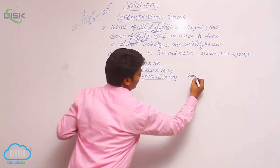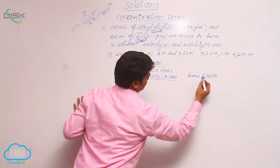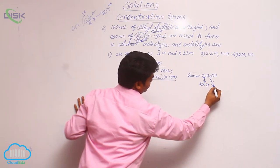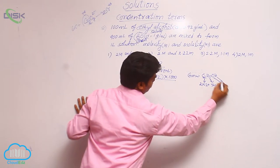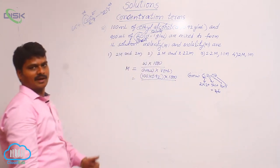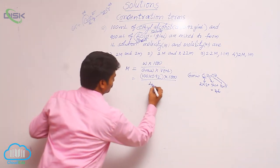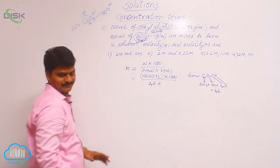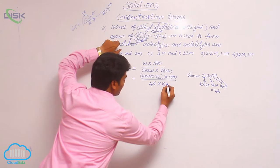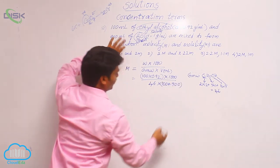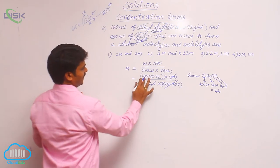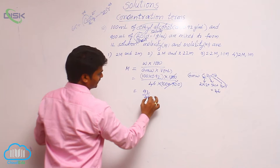The gram molecular weight of ethyl alcohol is calculated from its formula C2H5OH: 2 carbons (2×12) plus 5 hydrogens (5×1) plus oxygen (16) plus hydrogen (1) sums to 46. Substituting 46 for gram molecular weight and total solution volume (100 + 900 = 1000 ml), the 1000s cancel, leaving 100 × 0.92 = 92 divided by 46, which equals 2 molar.